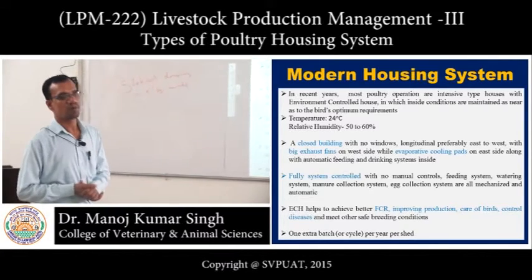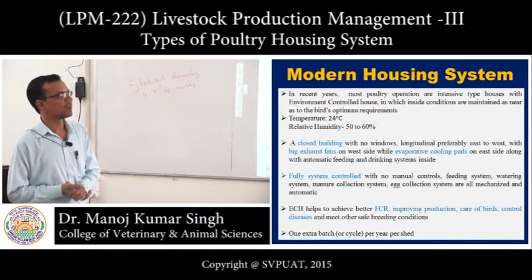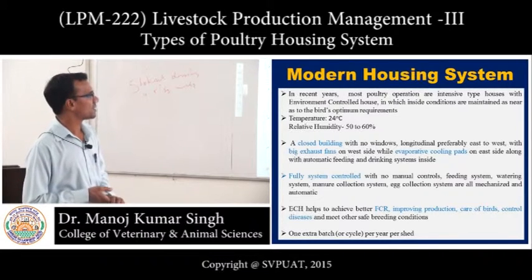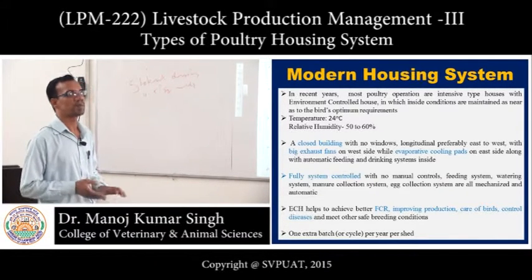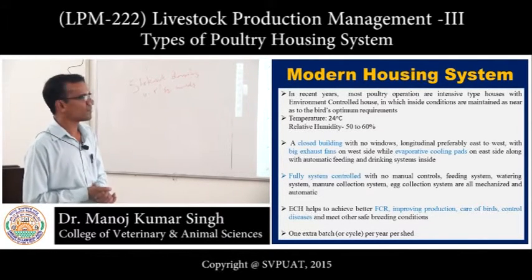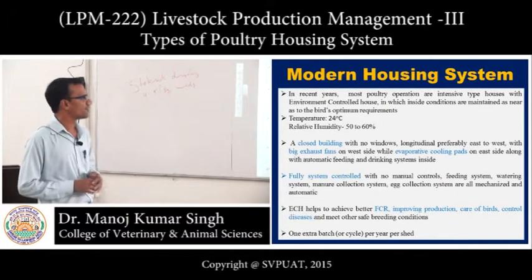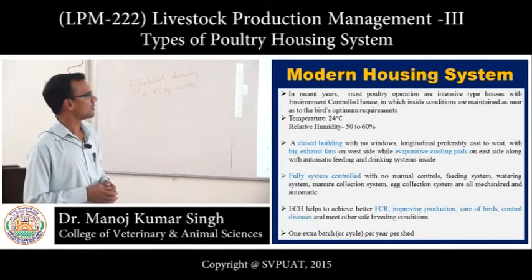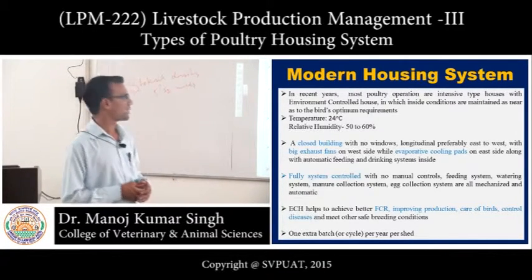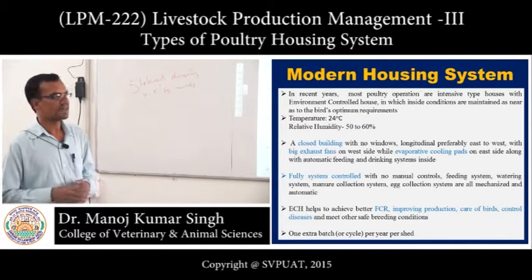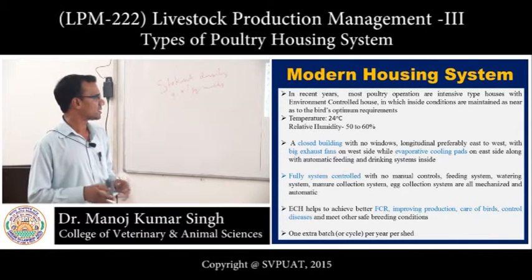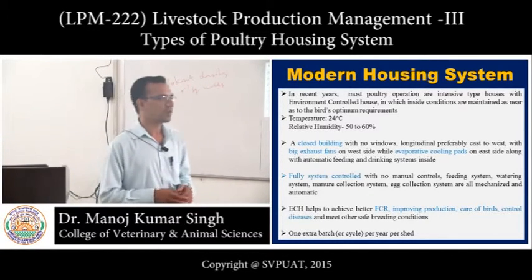The modern housing system is the most quality-intensive type with environmental controls where inside conditions are maintained nearest to the birds' optimum requirements. Temperature is maintained at 24 degrees Celsius, relative humidity at 50 to 60 percent. It is a closed building with no windows, oriented east to west, with large exhaust fans on the west side and inlets on the east side. Automatic feeding and drinking systems are installed, with all feeding, watering, egg collection, and air management fully mechanized.